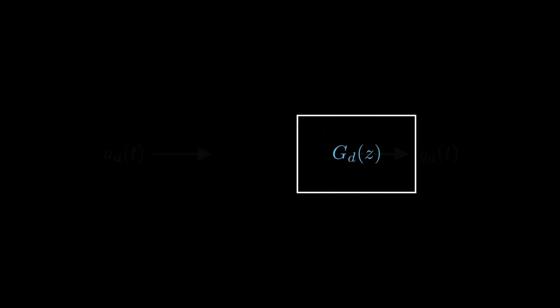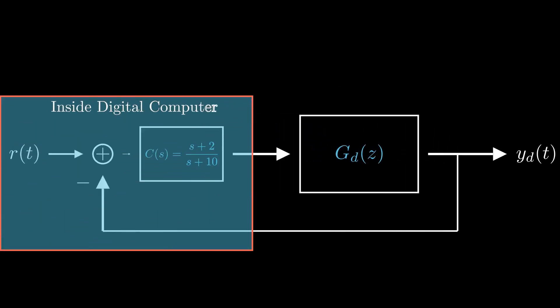Integrating G(z) into our complete system with digital computer, let's address what's happening inside the digital computer. Since digital computers process digital signals, the reference signal r(t) must now be discrete and accordingly, the controller should be in z domain.